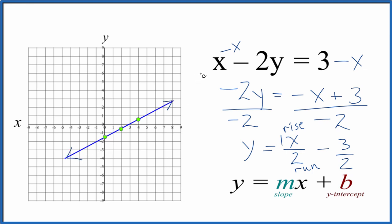And this is the graph for x minus 2y equals 3. We have a slope of 1 over 2, or 1 half, and our y-intercept is negative 3 over 2, or negative 1 and a half.